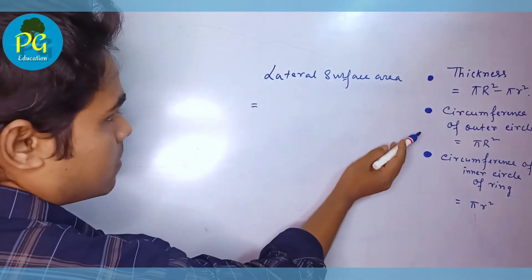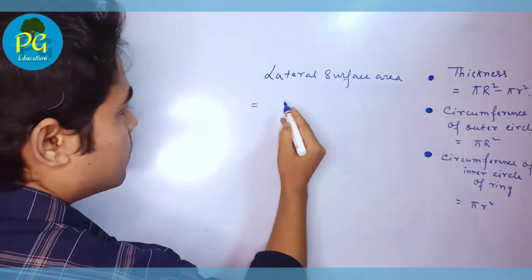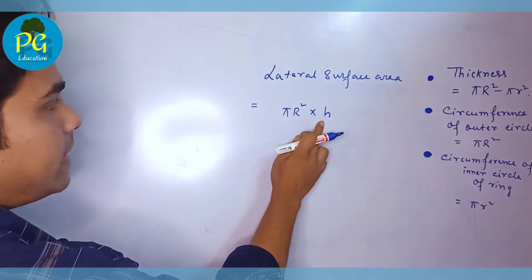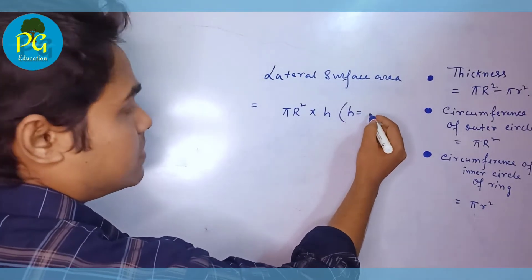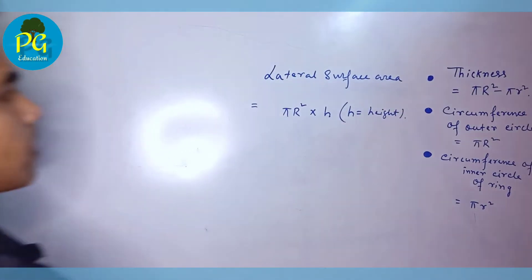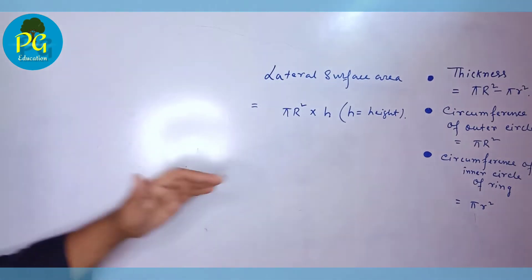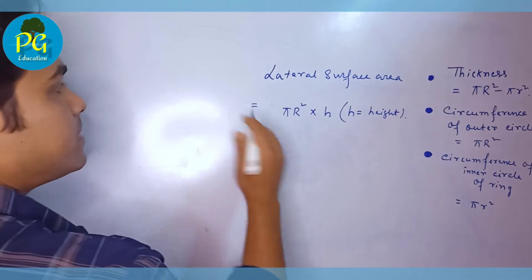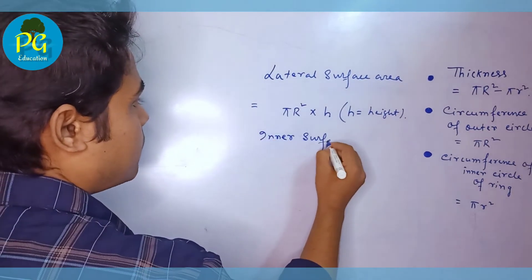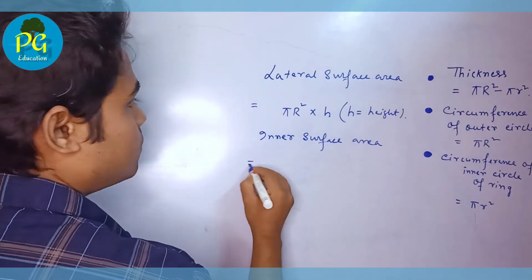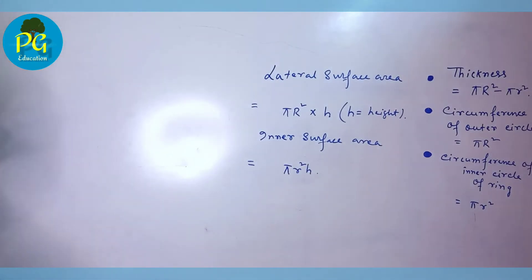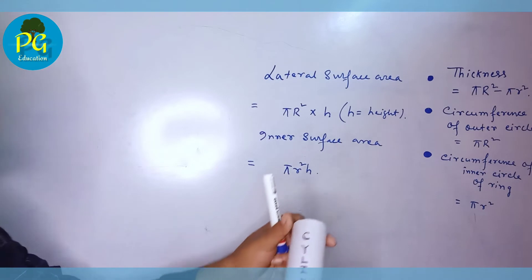Lateral surface area equals the circumference of the outer circle, that means 2 pi R into h, where h is the height of the cylinder. The inner surface area equals 2 pi r into h.